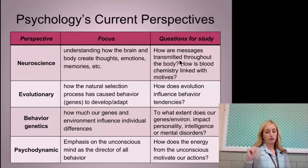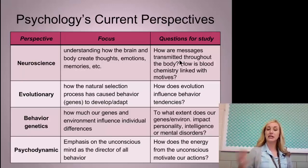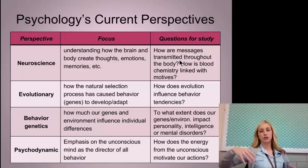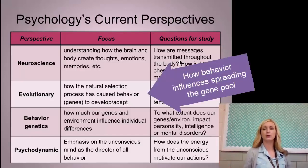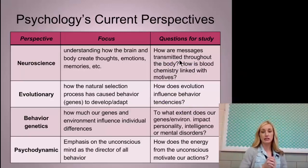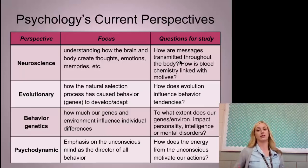Evolutionary — sometimes also called sociobiological — focuses on how the natural selection process has caused behavior with genes to develop and adapt. This is like today's functionalism, looking at how natural selection contributes to the spreading of our genes and the continuation of our species. How does evolution influence behavior tendencies in allowing us to survive? Behavior genetics looks at how much our genes and environment influence individual differences — to what extent do our genes and environment impact personality, intelligence, or mental disorders?